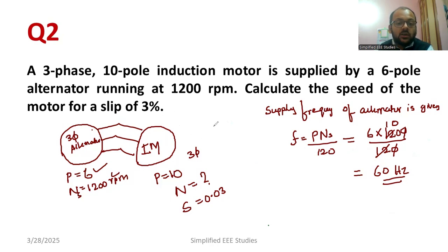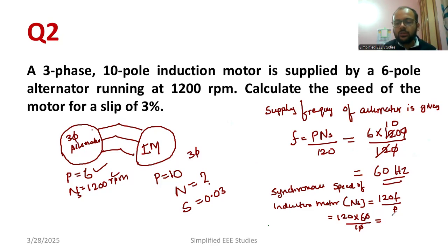Now calculate the synchronous speed of induction motor. That is given by Ns = 120*F/P. Substitute 120*60 divided by 10 poles. This becomes 720 RPM, which is the synchronous speed of the induction motor or speed of rotating magnetic field.